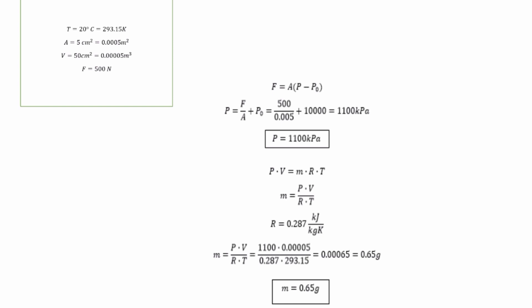m equals PV over RT equals 1100 times 0.00005 over 0.287 times 293.15.